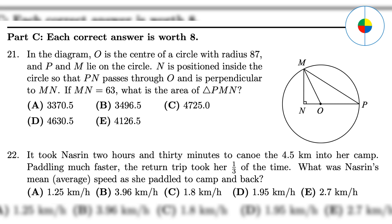Question 22: To calculate the average speed, you need to calculate the total distance and total time first. The total distance is 4.5 times 2, which is 9 kilometers. The total time spent is 150 minutes plus 50 minutes, which is 200 minutes, or 3.3 hours. 9 kilometers over 3.3 hours — the answer is E.